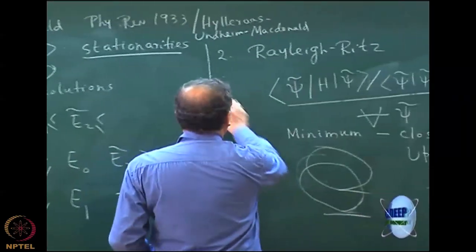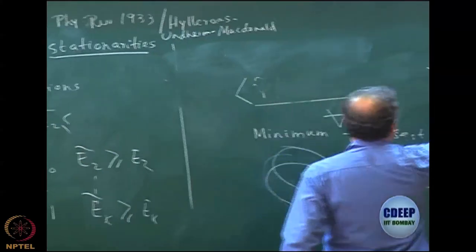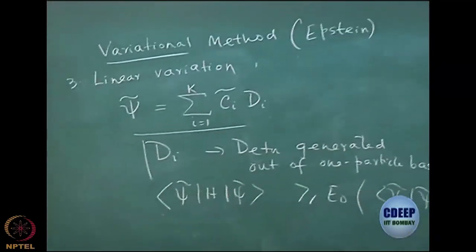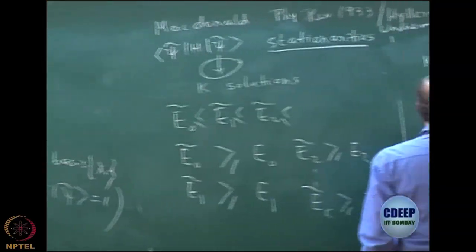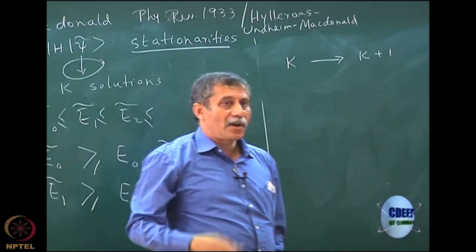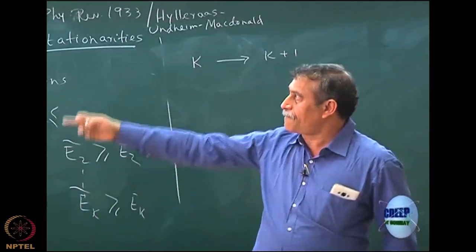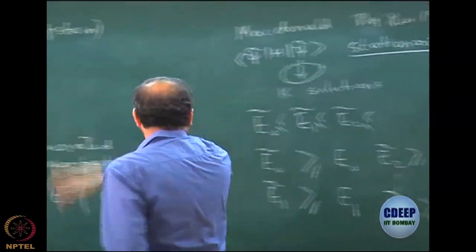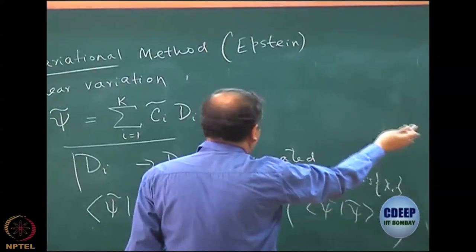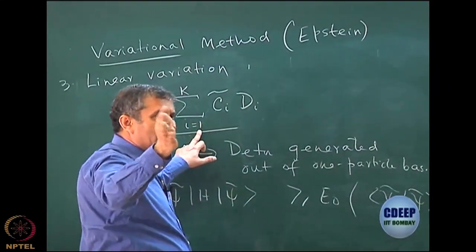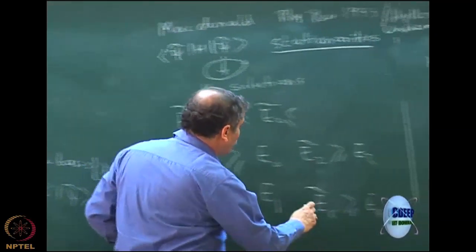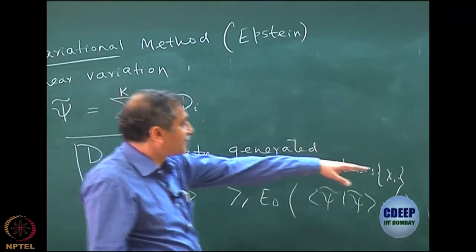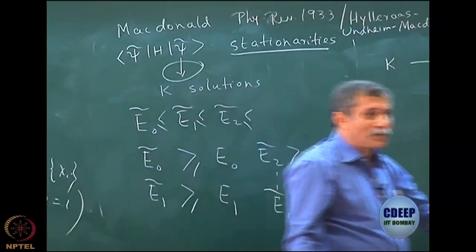Let me start from this k-dimensional basis and then add one more basis, changing from k to k plus 1. My trial function now becomes a sum up to k plus 1 terms — please make that correction, it should be k minus 1 for k-dimensional. If I have k plus 1 dimensional basis, I will now get E_0 tilde, E_1 tilde, and so on up to E_k tilde.